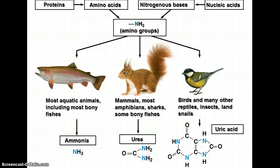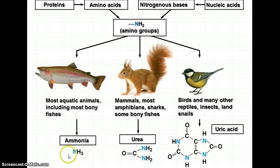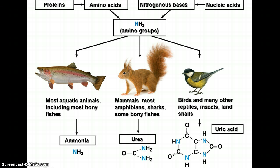Different animals produce different nitrogen waste compounds from amino group breakdown. Most aquatic animals produce ammonia, released from gills or filtered by kidneys. Mammals, most amphibians, sharks, and some bony fish produce urea, filtered by the kidneys. Birds, other reptiles, insects, and land snails produce uric acid. All three compounds are nitrogen-based and can be harmful if they build up. The kidneys remove nitrogen compounds and excess salts while maintaining water balance.